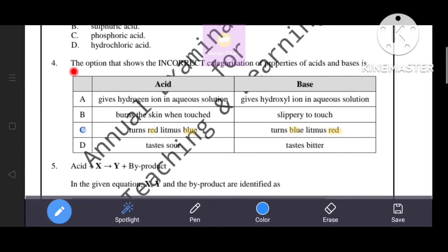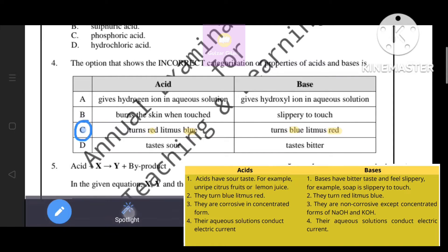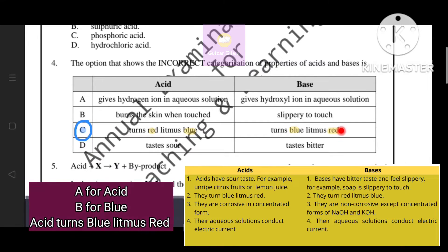Next question. The option that shows the incorrect categorization of properties of acids and bases... Option C is the correct answer. Acid turns blue litmus red, not blue. Base turns red litmus blue, not red. I'm going to remember the trick. Let's go to the alphabetical order: A for acid, B for blue means acid turns blue litmus red.